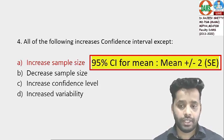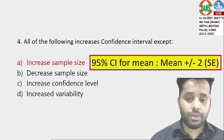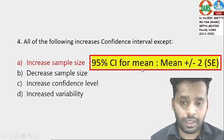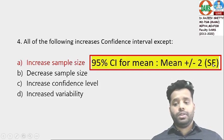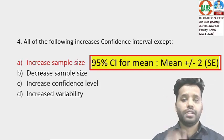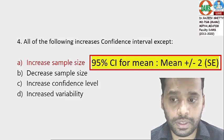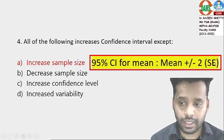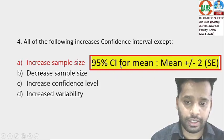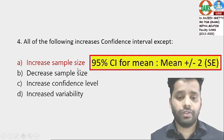All of the following increase confidence interval except. You should know the formula. For the confidence interval of the mean: sample mean ± 2 × standard error. Standard error of mean = standard deviation / √(sample size). So standard error is inversely related to sample size. If sample size increases, standard error decreases, and therefore the width of the confidence interval decreases. So increase in sample size will decrease confidence interval width — that is the 'except' answer.